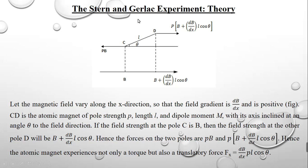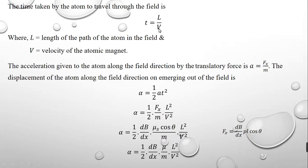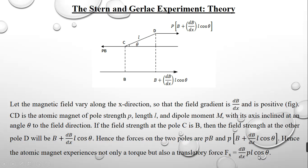Due to this translatory force, the beam is going to deviate from its straight line path. Let T be the time of passage of the dipole in the non-uniform magnetic field, given by T equals L by V, based on the equation velocity equals distance by time, where L is the length of the path of the atom in the field and V is the velocity of the atomic magnet. The translatory acceleration is given by a equals fx by m, where fx is the translatory force, which is P into dB/dx·L·cos theta.